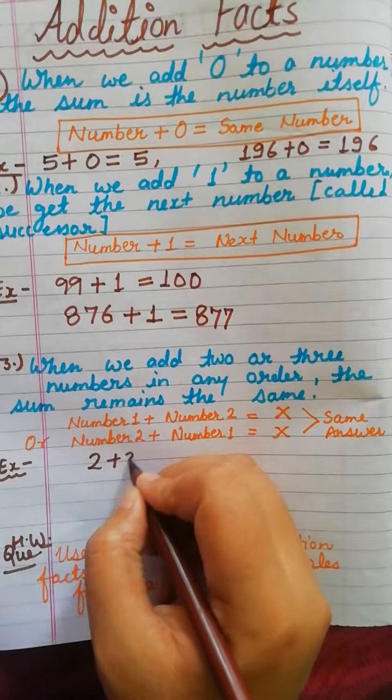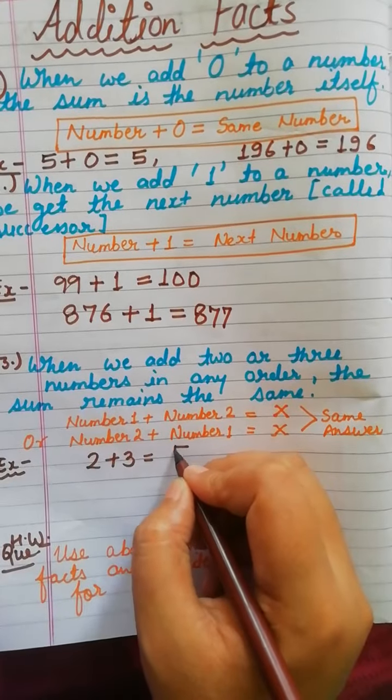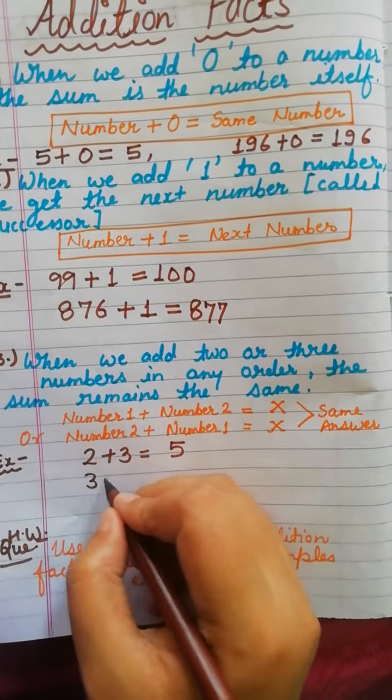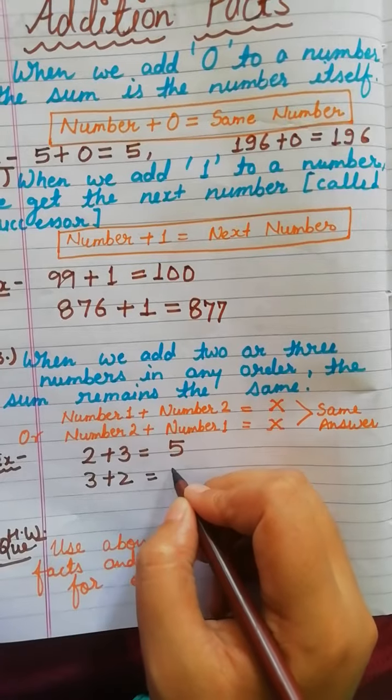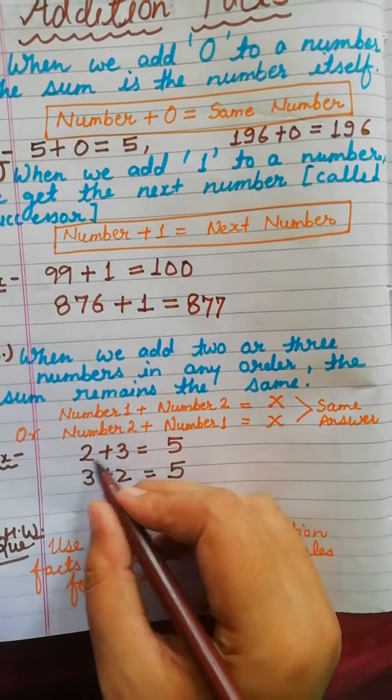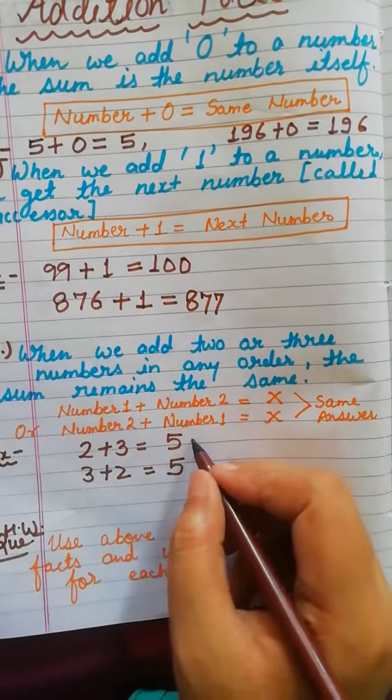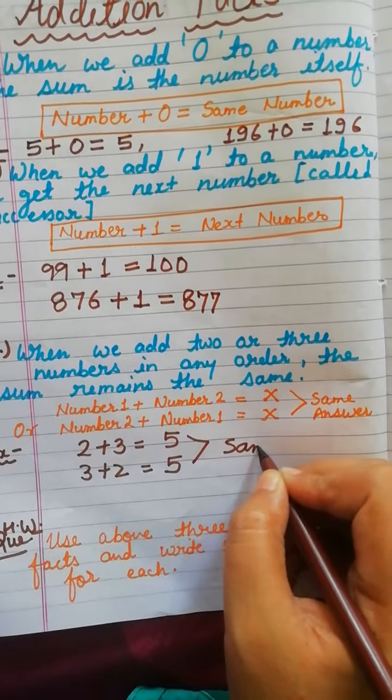If we are adding 2 plus 3, this will give 5. Or if we are adding 3 plus 2, it is also giving you 5. So if we are changing the order, the answer is the same.